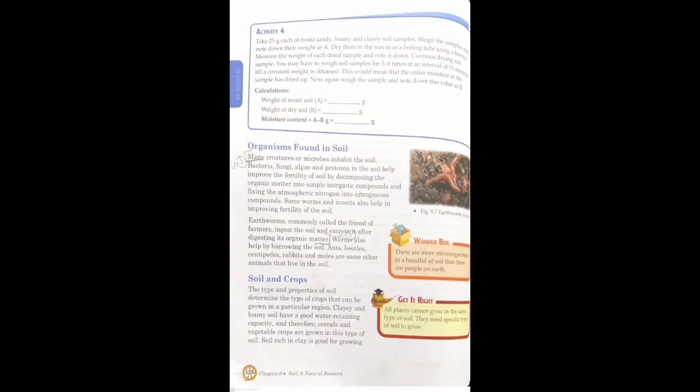The next topic is organisms found in soil. Many creatures and microbes inhabit the soil, such as bacteria, fungi, algae, and protozoa. These organisms help improve soil fertility and help in decomposition — breaking down organic matter into simple inorganic compounds. Some microorganisms also help by fixing atmospheric nitrogen into the soil.